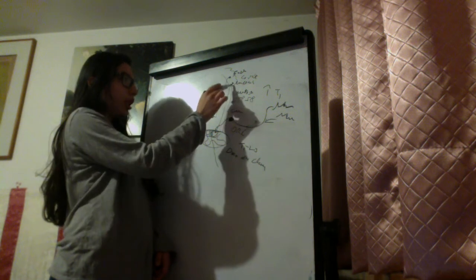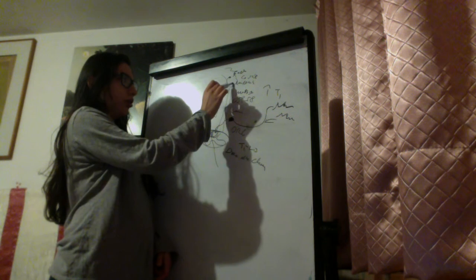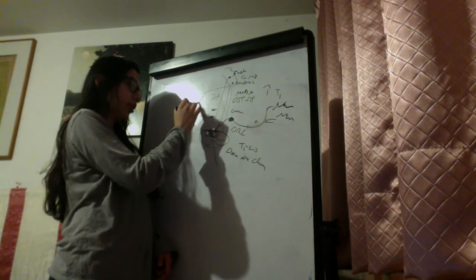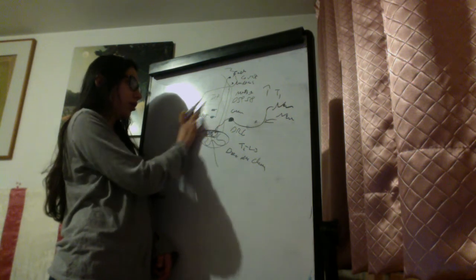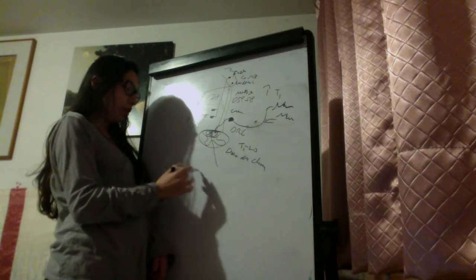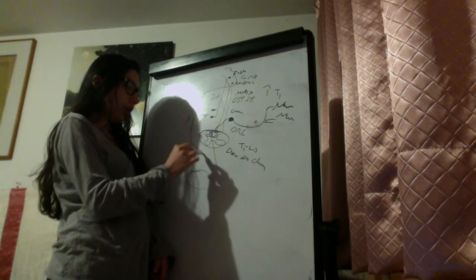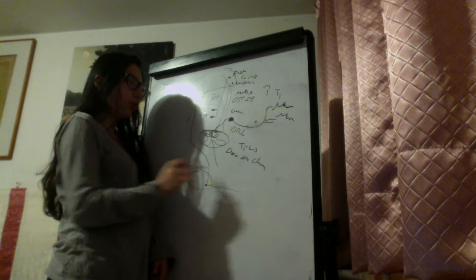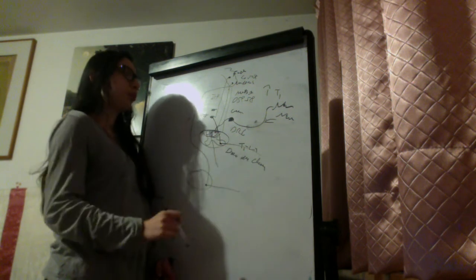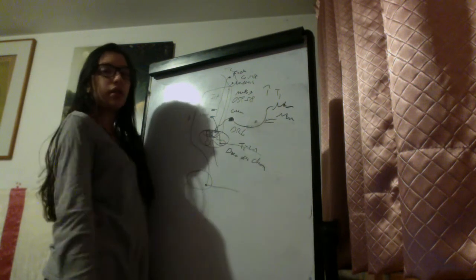Tracts descending from the emboliform and globus nuclei cross to the other side at the decussation of the superior cerebellar peduncles and descend to the red nucleus — specifically, the one red nucleus of the contralateral side. From there, a neuron crosses again and ends up on the ipsilateral lower motor neuron. So ultimately, what originates from the right hemisphere influences the muscles on the right side.